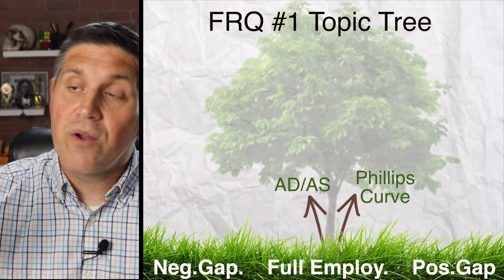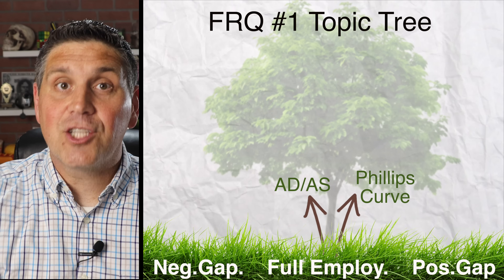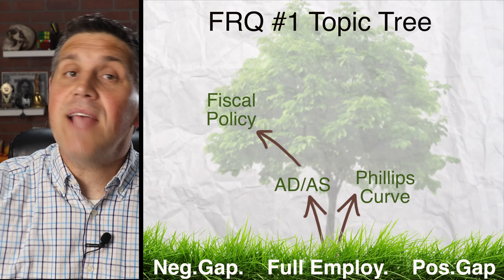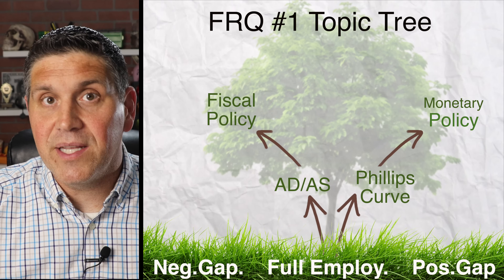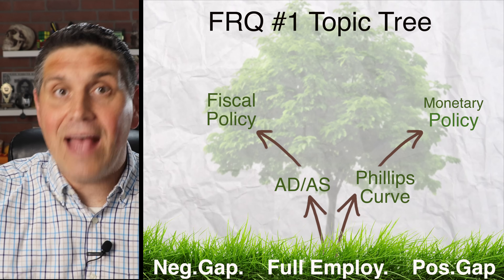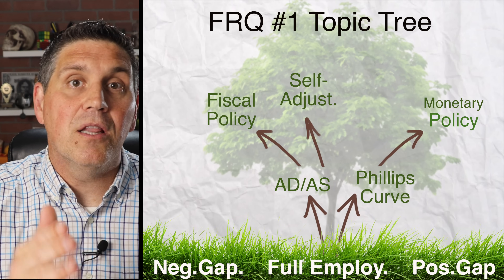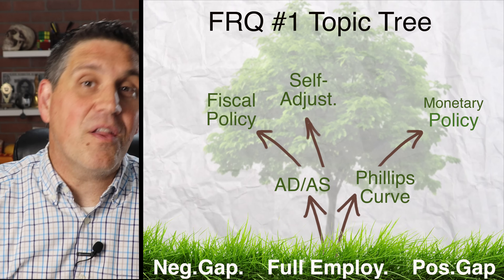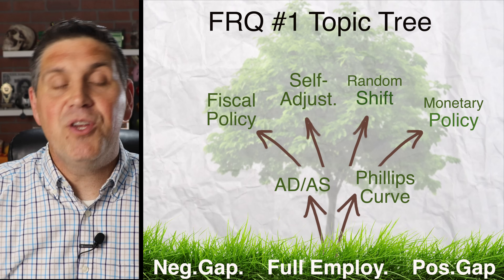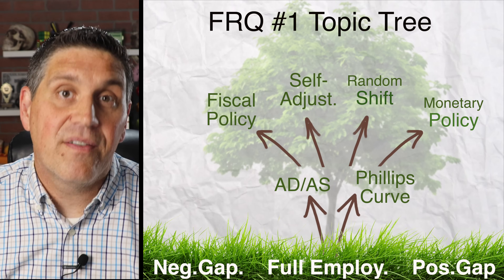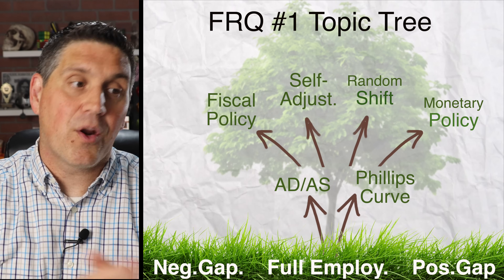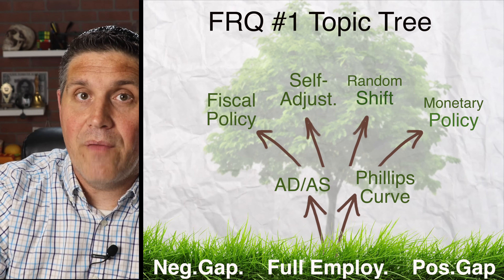From there, they usually ask you to do one of four things. First, they can ask you about fiscal policy and how that could close any gaps. Second, they can ask you about monetary policy and how that can be used to close the gaps. Third, they can say there's no policy and ask you questions about a long-run self-adjustment. And fourth, they can ask about some random shift — something happened and this needs to be shown on that graph. They ask you one of these four things, have you explain it, and usually draw it on the graph you drew in the beginning. They'll bounce around — they might ask you about monetary policy and a long-run self-adjustment.